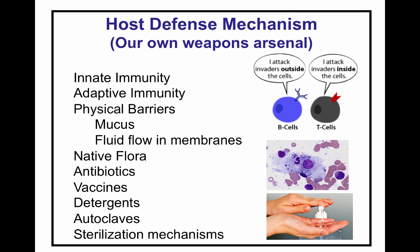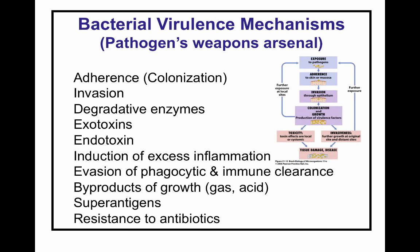Our defenses include the adaptive and innate immune systems, physical barriers like skin and mucosa, fluid flow in the intestinal and urogenital tracts, and our natural flora — which compete with pathogens for niche space, thereby protecting us. We also have vaccines, antibiotics, detergents, and autoclaves. For every weapon in our arsenal, pathogens have a counter-weapon.